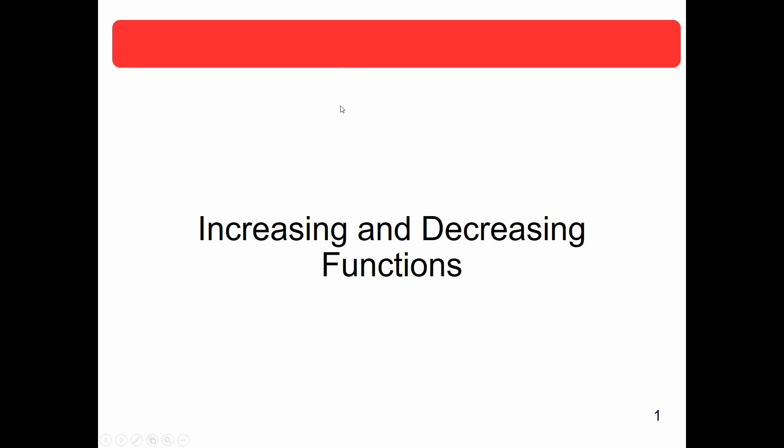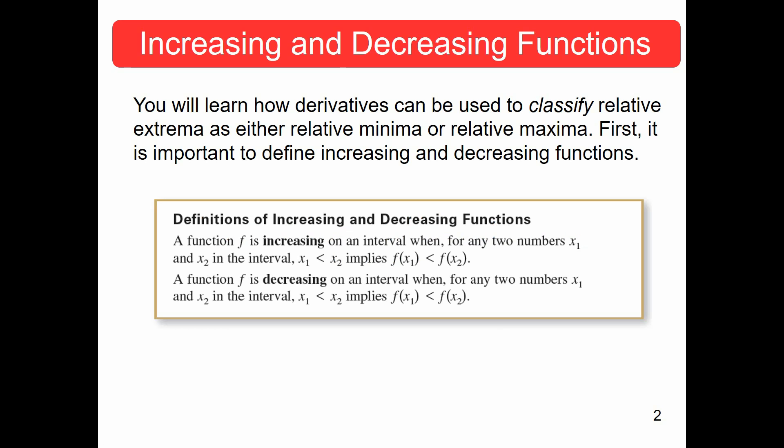In this video, we're looking at increasing and decreasing functions. We'll learn how derivatives can be used to classify relative extrema as either relative minimum or relative maximum. First, we have to define what an increasing and a decreasing function is. An increasing function is one that from left to right is rising, and one is decreasing if it is falling from left to right.